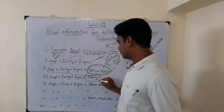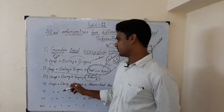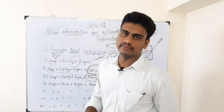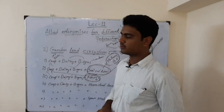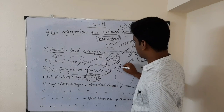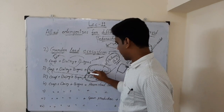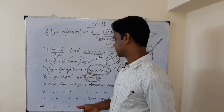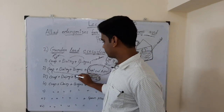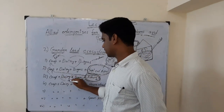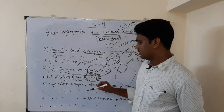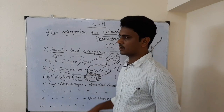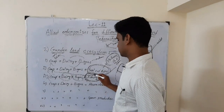The next model is crop plus dairy plus biogas plus fishery — sericulture is removed and fishery is added. Unlike the wetland system where we dig a pit within the field itself, here we separately have a pond for the fishes. According to the land area opted for raising fish, we choose the number of fingerlings — how many fishes to release. From the crop, harvested material can be fed to the fish. Bio slurry from biogas can also be given, though it is not very effective for fishery.